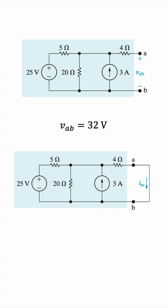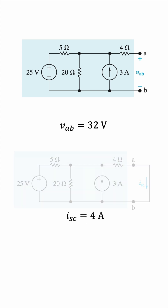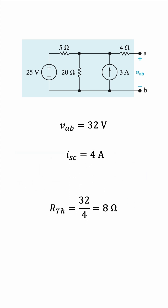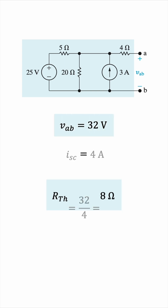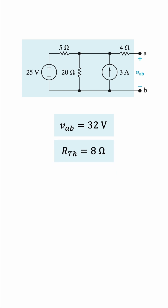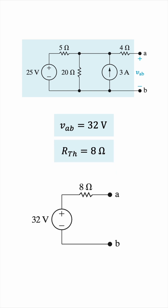We would then short the two terminals together and find this short circuit current, which will be 4 amperes. The quotient would be the resistance, 8 ohms. So 32 volts and 8 ohms would give you the Thevenin equivalent of this circuit with respect to terminals A and B.